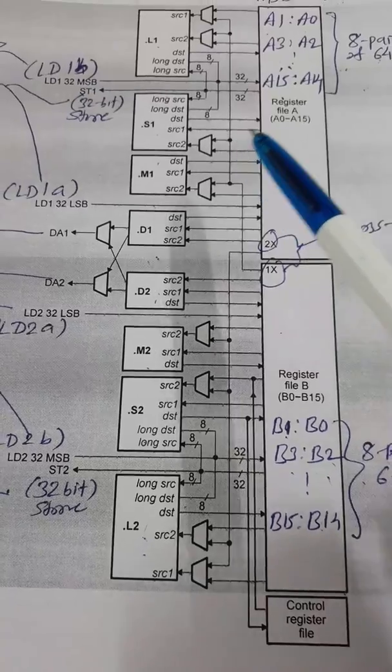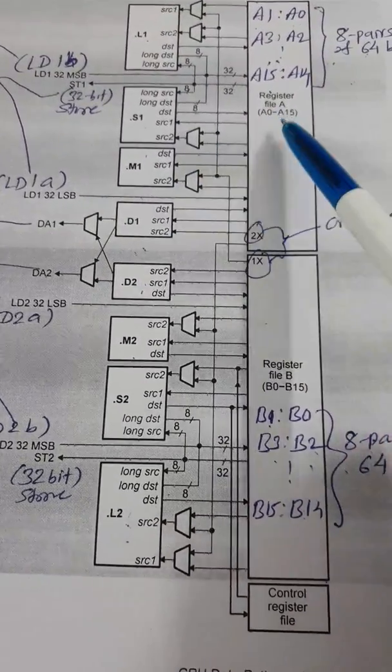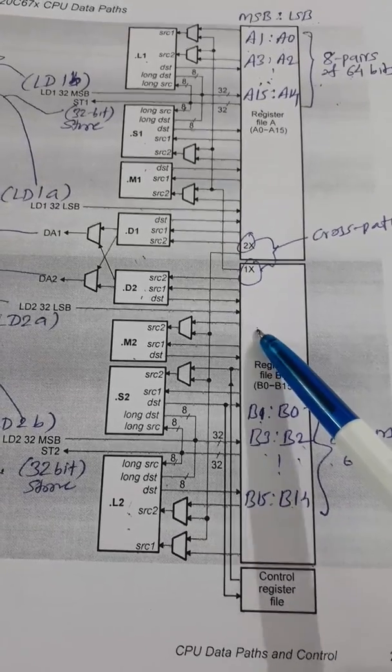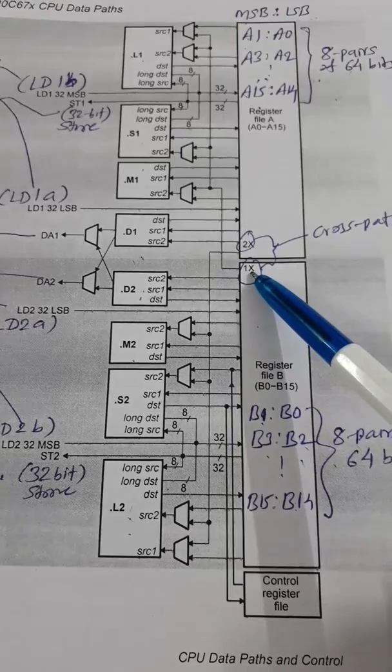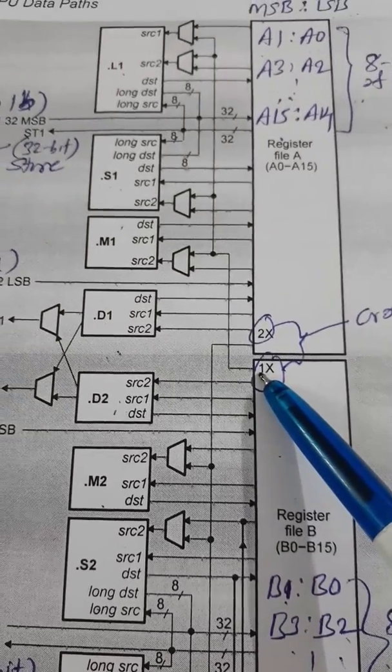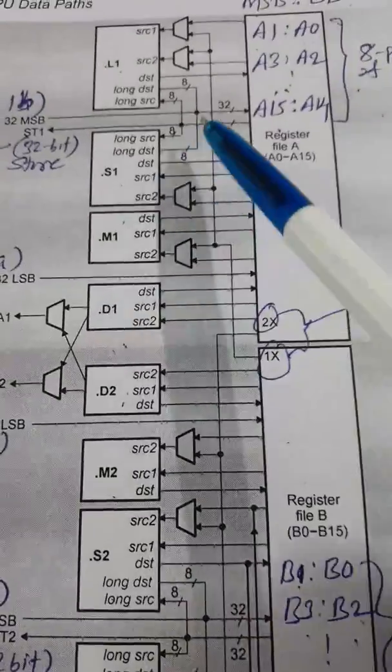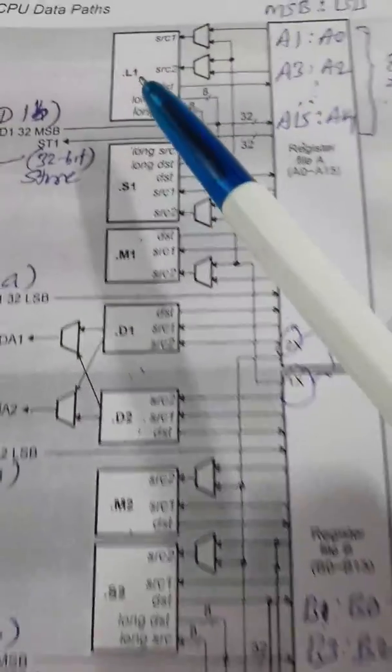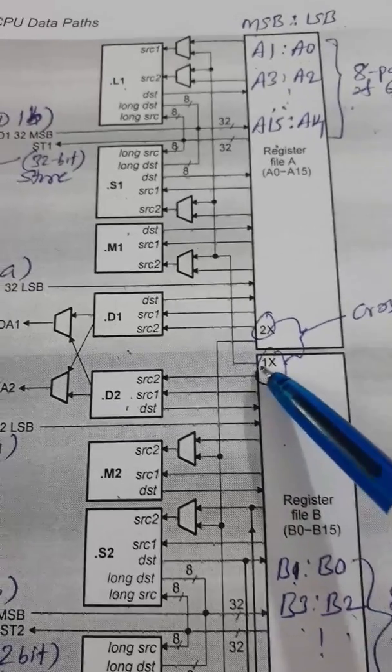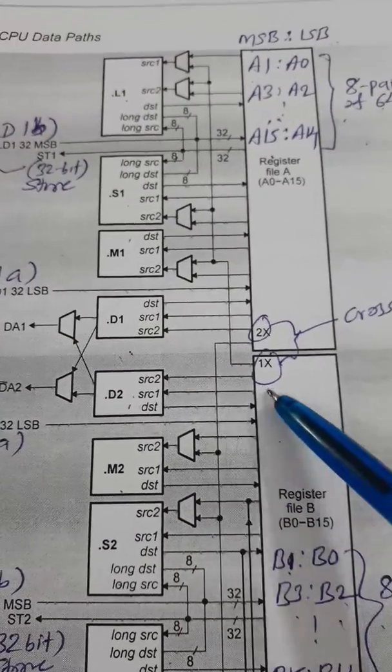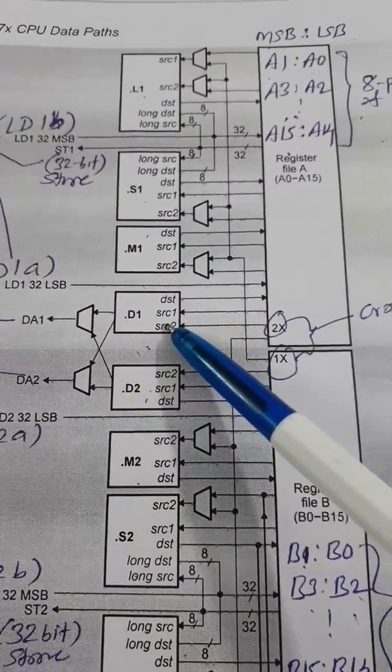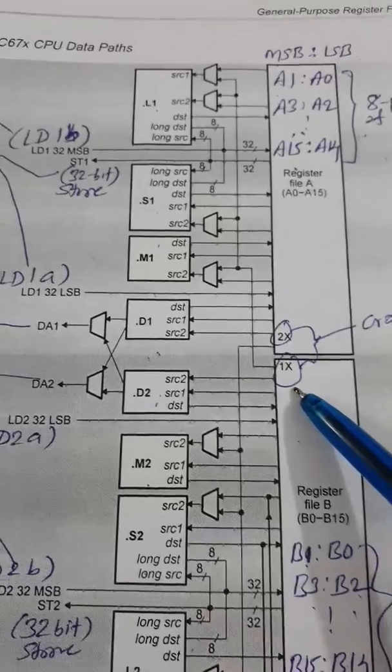Next, I told you that these four units can have access to the registers in path A, and lower four units have access to path B or registers in path B. Now, there are cross paths also available, that is 1x. This 1x is enabling some of the units, only three units actually, L1, S1, and M1 units, to access the data from path B. So this 1x provides the access to the data in path B registers to the units, upper units, or units in the upper path, that is path A.